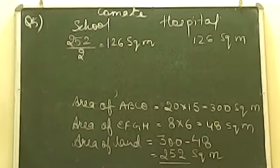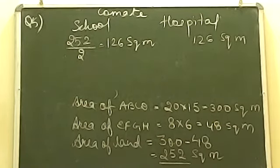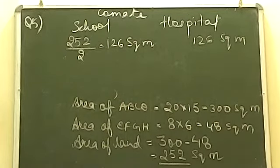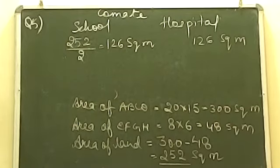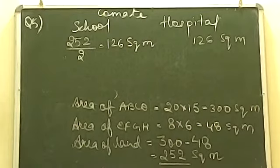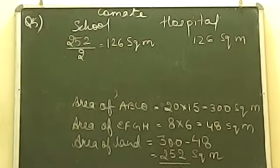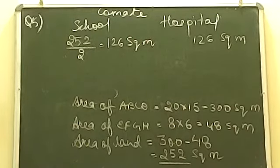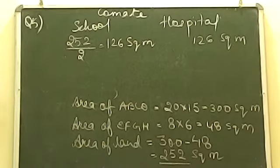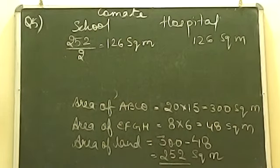What happens to the area of a square when its side becomes half? If side was 4 and now we have 2, what impact is there on its area? The answer will become one-fourth. It will become one-fourth.